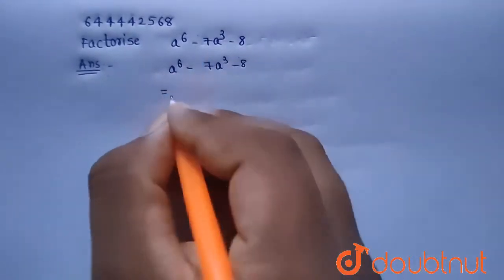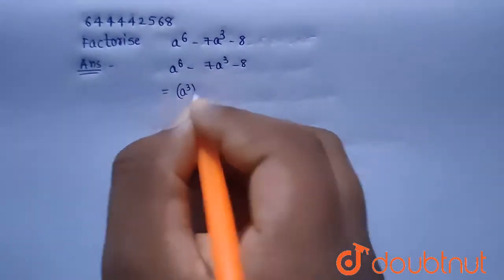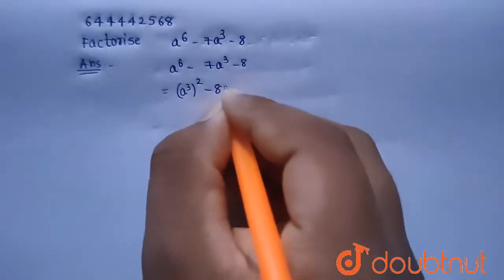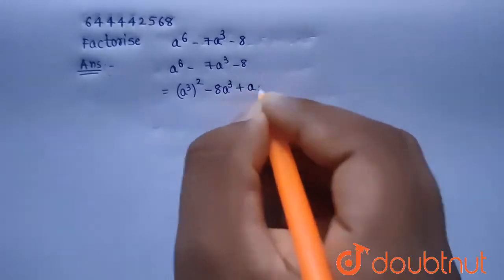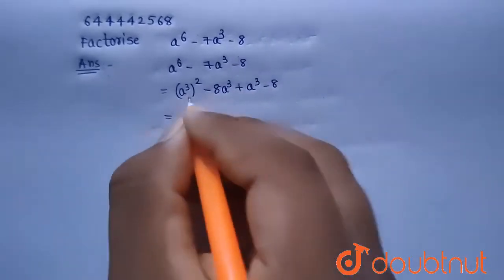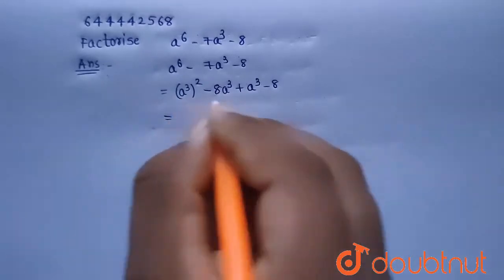Now we can write this a^6 as (a^3)^2, and this minus 7a^3 can be written as minus 8a^3 plus a^3 minus 8. Now if you observe, we can take a^3 common from the first two terms.